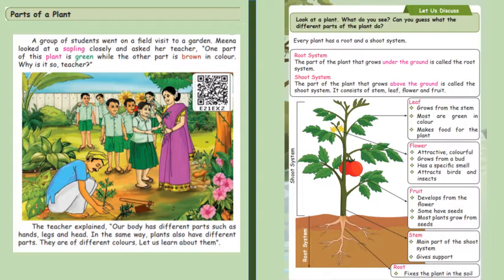So look at the plant. What do you see? Can you guess what the different parts of the plant do? So this is an exercise. You can just take a plant and show it to your child and discuss it with the child, the different parts.